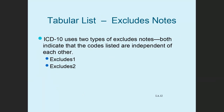ICD-10 includes excludes notes. There are two types: excludes 1 and excludes 2. These are very important — they give important information about coding, about whether or not you report a code. Excludes notes indicate the codes listed are independent of each other, not part of the same condition.